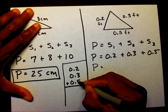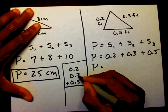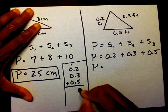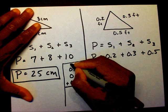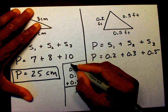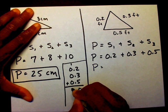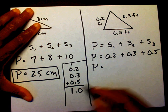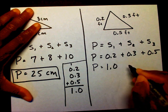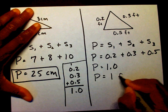I'm going to add my numbers starting on the right. Five plus three is eight, plus two is ten. My one goes at the top, my zero goes down at the bottom. One plus zero plus zero plus zero is one. Therefore, my perimeter is one point zero, or I can just say one foot.